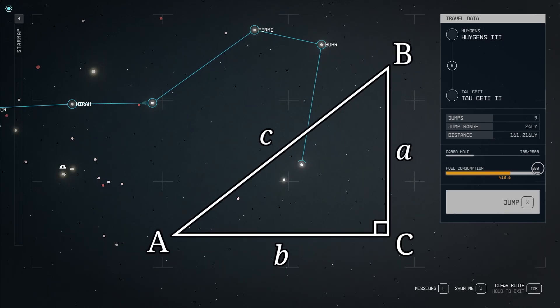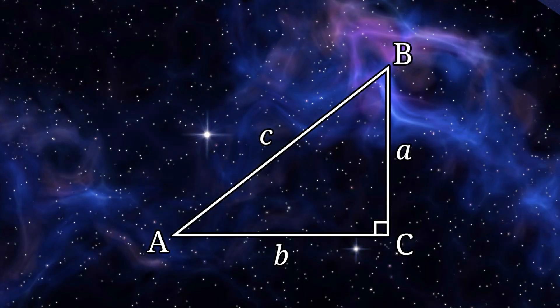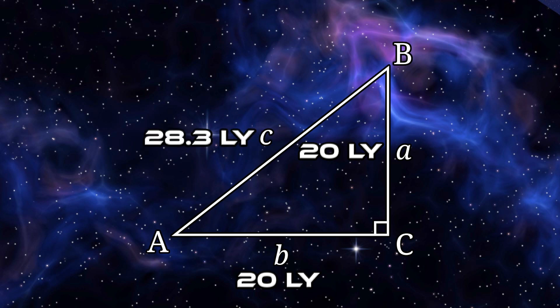Let's take a look at this right triangle. If sides A and B are both 20 light years, then side C would be about 28.3 light years.